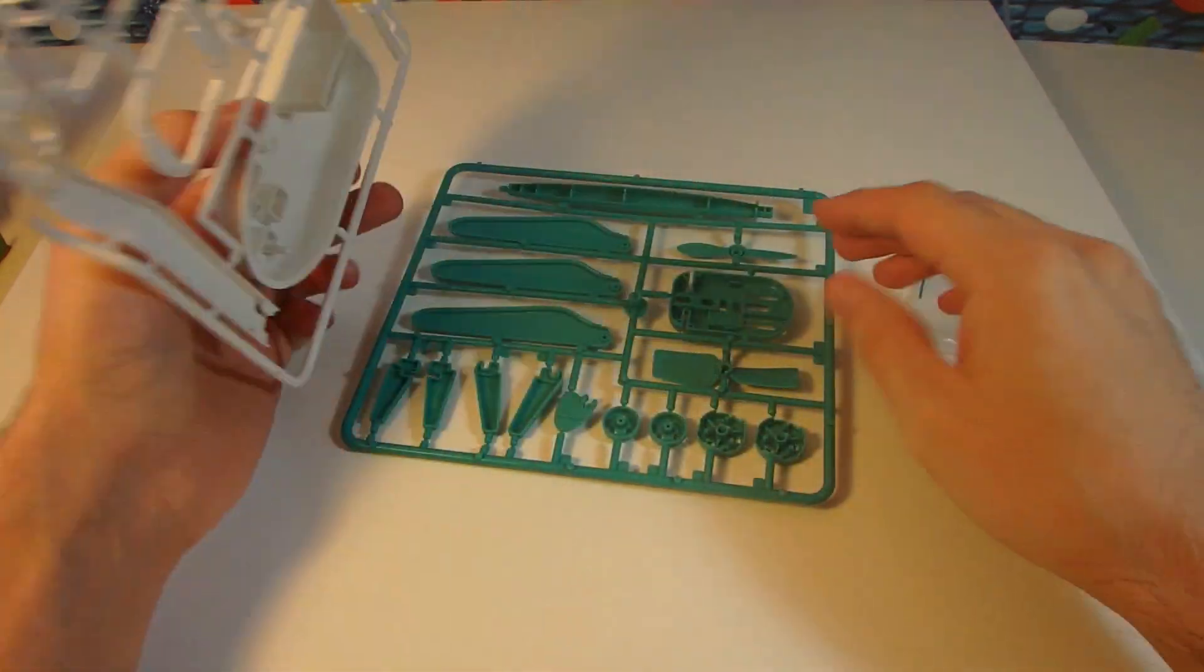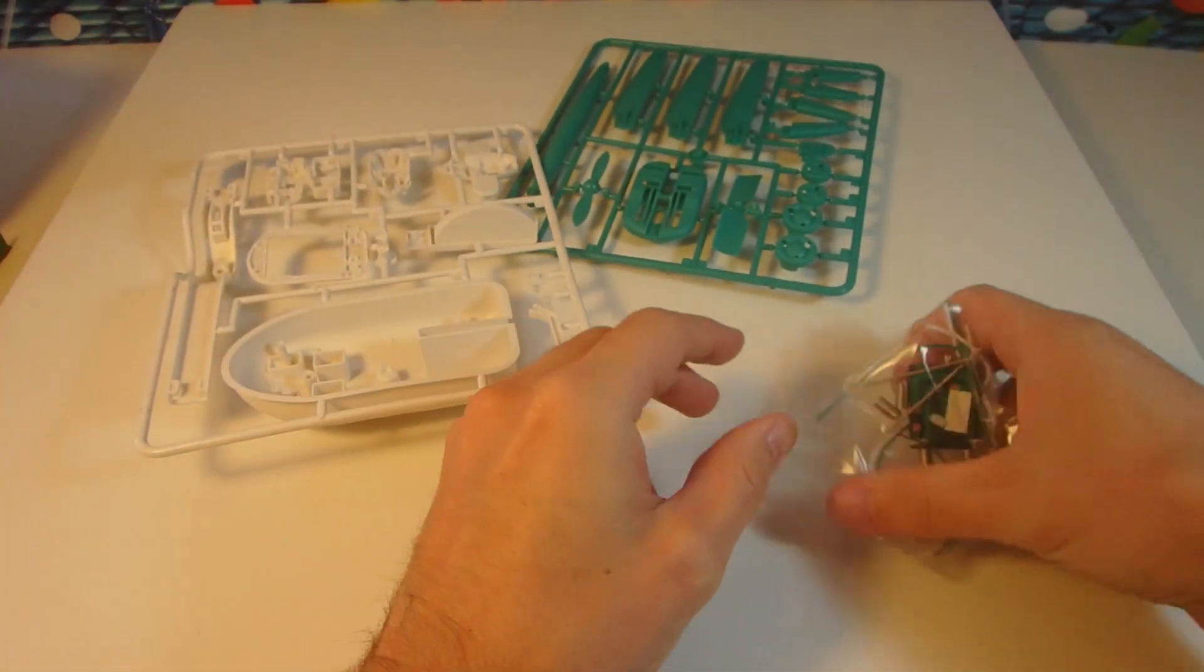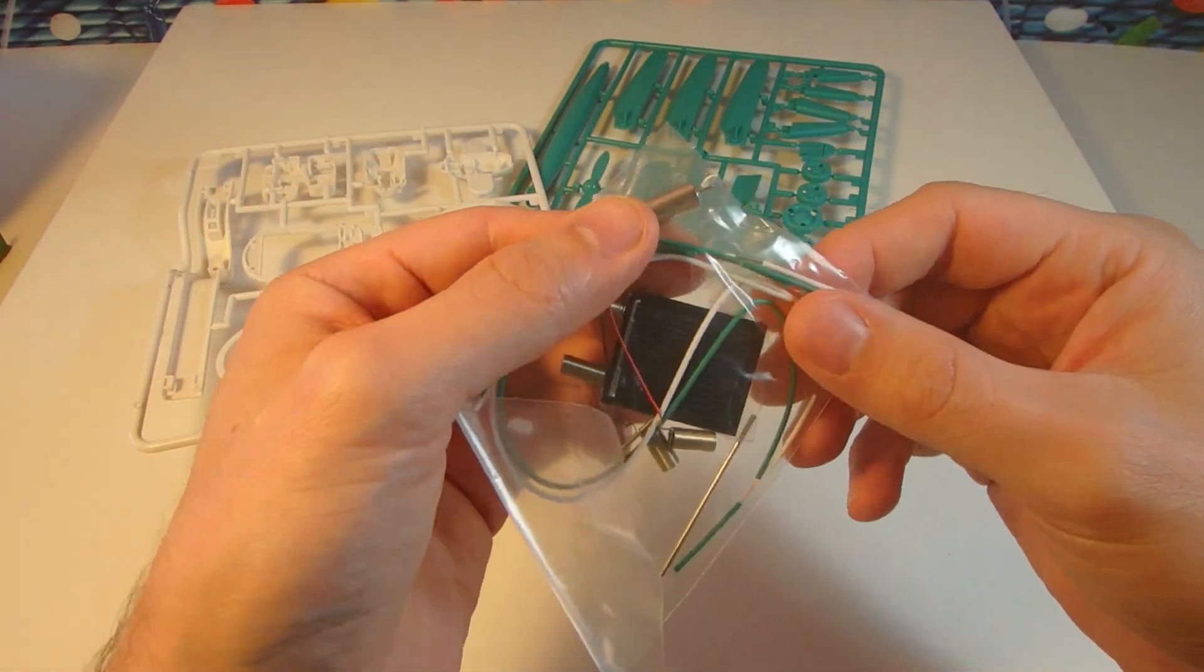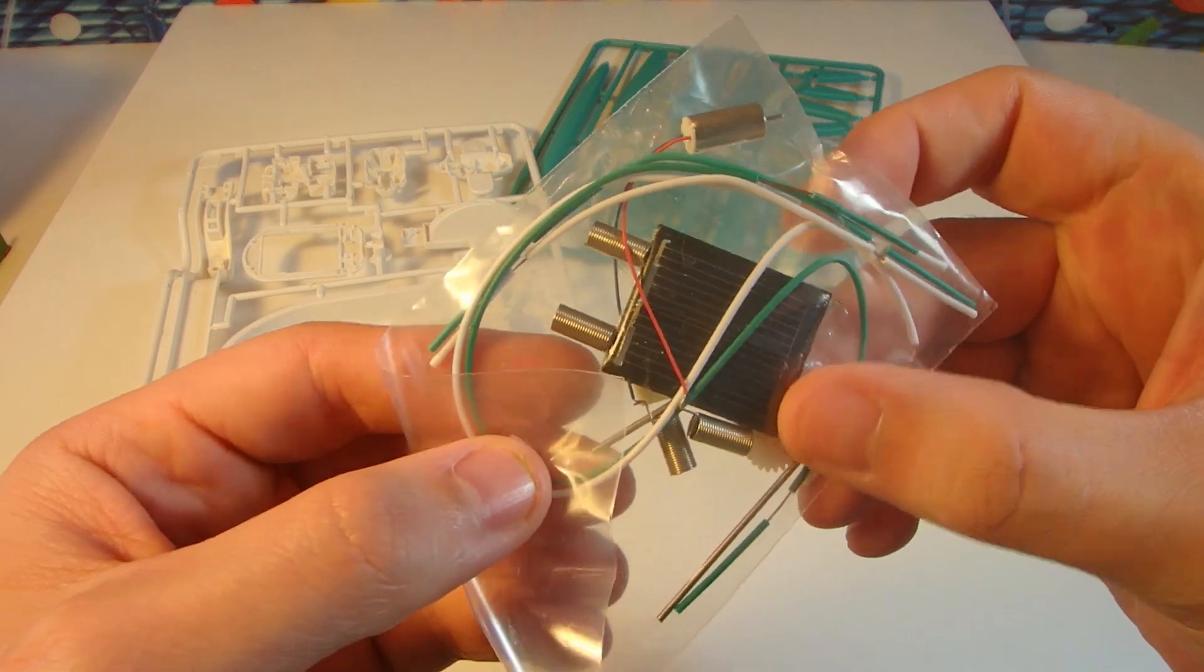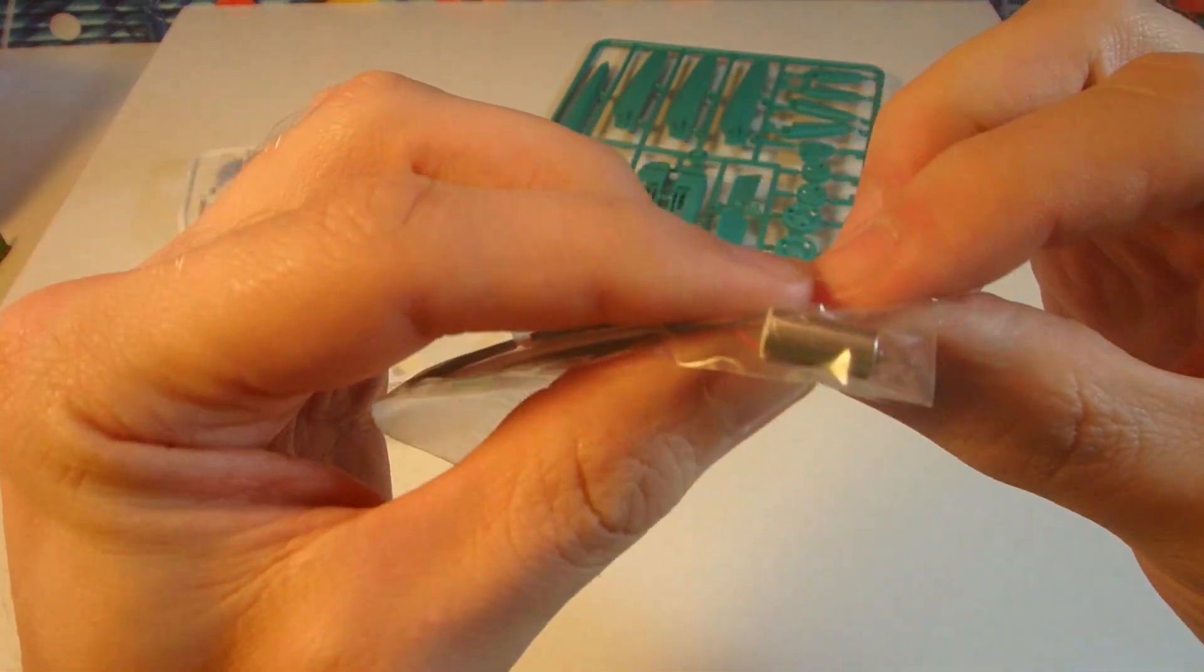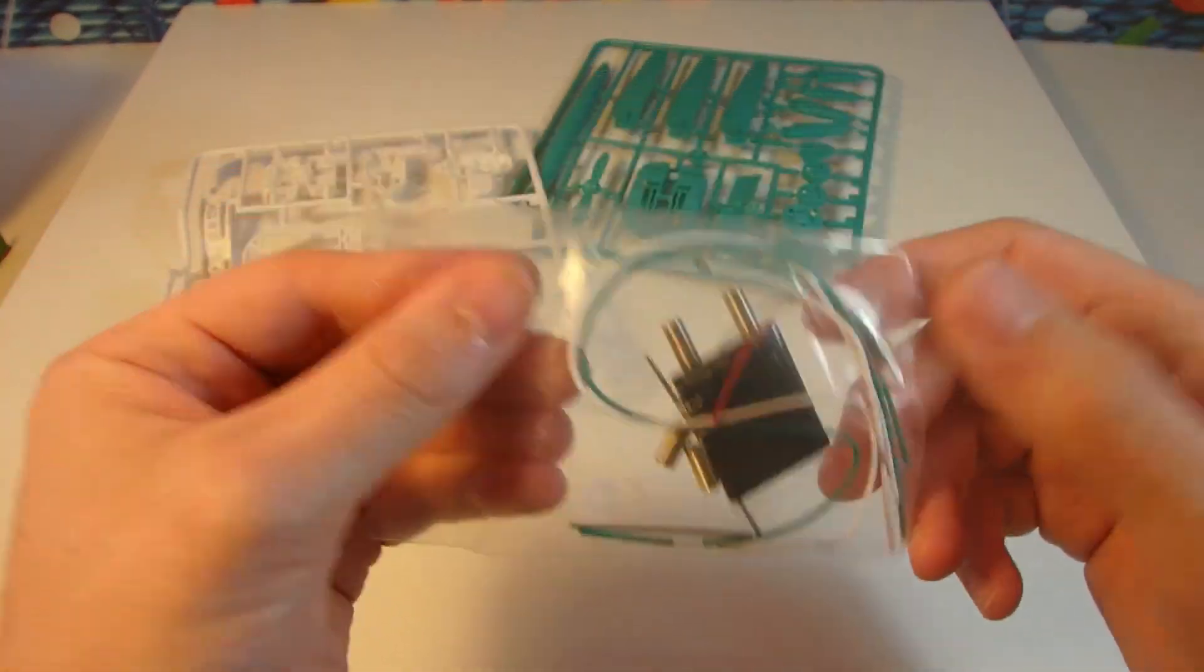So in there we have our plastic pieces we got to pop those out and put them together ourselves. And in this little bag we have some springs, a gear, a solar panel, a tiny little motor, and some wires to hook it all together to make it work.